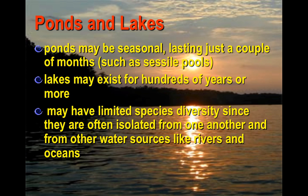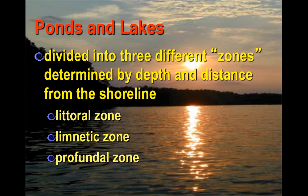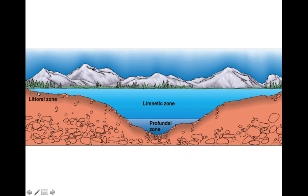Ponds are seasonal and usually only last up to a couple of months, though some have lasted a few years. Lakes can last for hundreds of years, but the number of species found in these areas is limited. Ponds and lakes are divided into three zones: the littoral, limnetic, and profundal — you can see them right here.